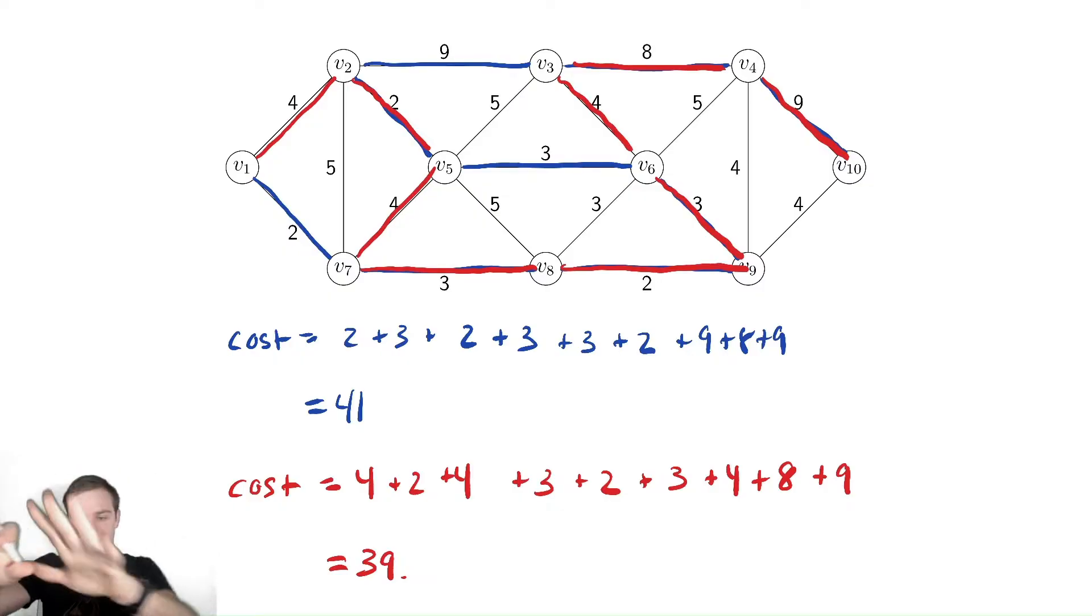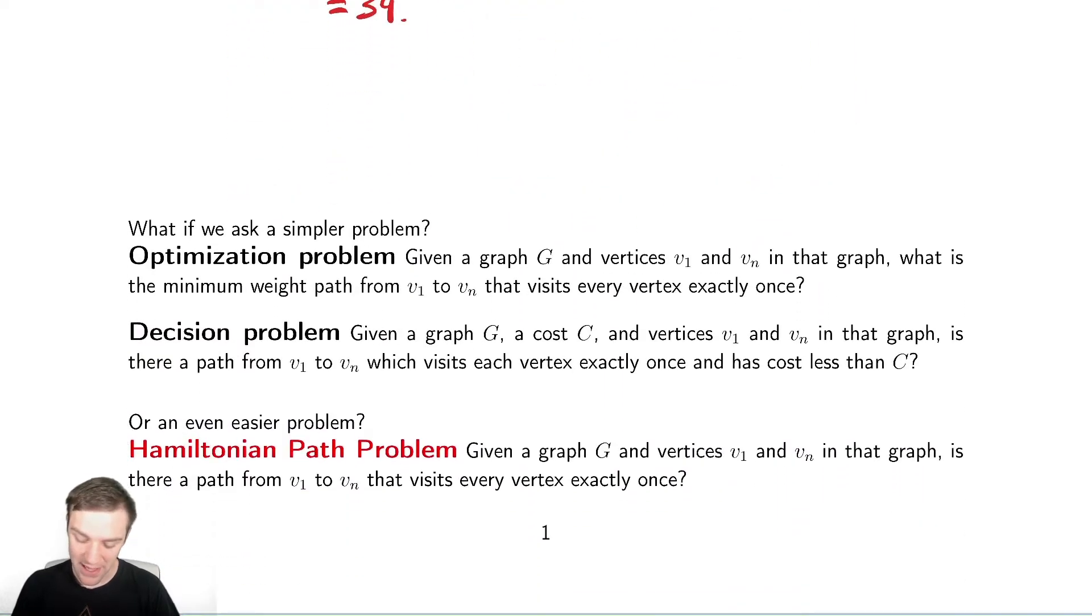So maybe even easier. Let's push back even further. Let's ignore the costs entirely. Is there a path from V1 to V10 that touches every vertex exactly once? That seems like a much easier problem, right? So we have the Hamiltonian path problem. Given a graph and starting and end vertex, is there a path from V1 to VN that visits every vertex exactly once? Seems again much easier. In fact, I can actually prove to you it's a bit easier in some sense of easier. So let's look at what I mean by that.